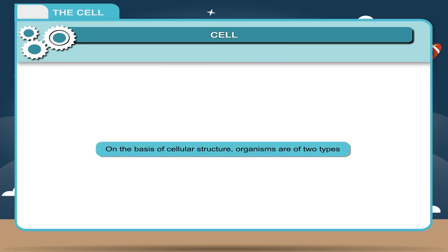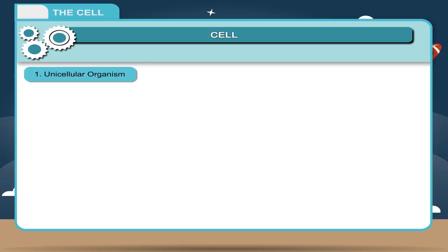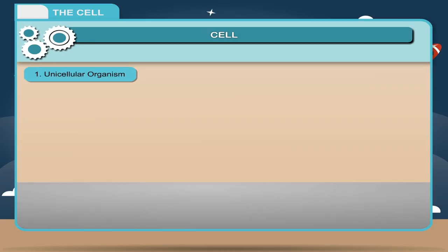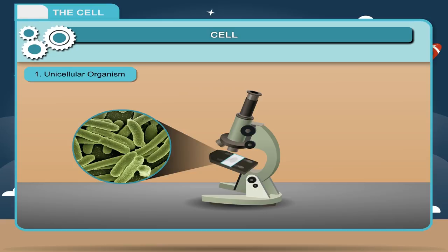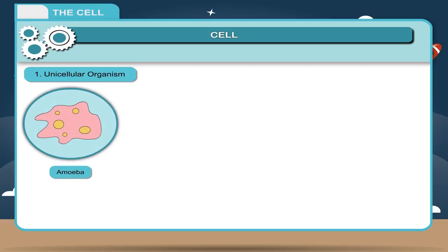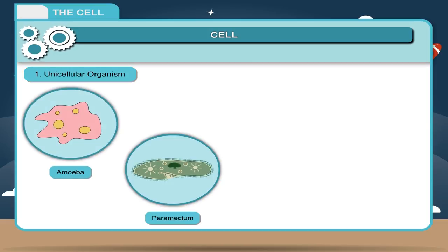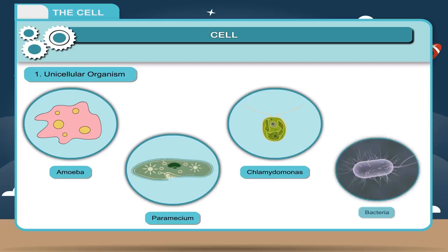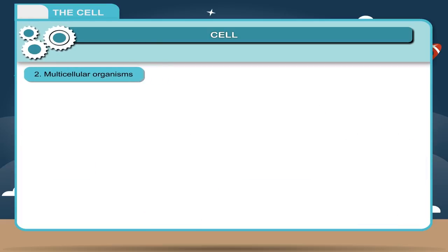On the basis of cellular structure, organisms are of two types. One, unicellular organisms. Some organisms are made up of a single cell. They can be observed only with the help of a microscope, therefore they are called microscopic organisms. Examples: amoeba, paramecium, chlamydomonas, bacteria, etc.